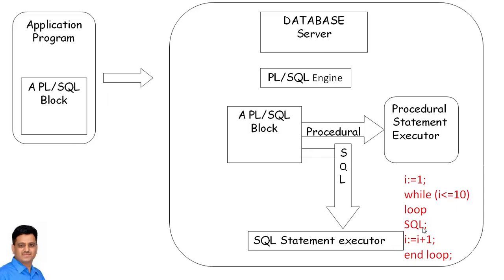The SQL statement itself is executed by the SQL statement executor. Based on the value of i, the procedural statement executor sends the SQL statement to the SQL statement executor. If the value of i is less than or equal to 10, it continuously sends the SQL statement for execution — in this case 10 times, because the statement is inside a loop. This is how PL/SQL blocks are executed by the PL/SQL engine using the procedural statement executor and SQL statement executor.